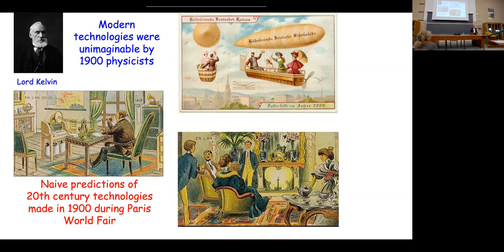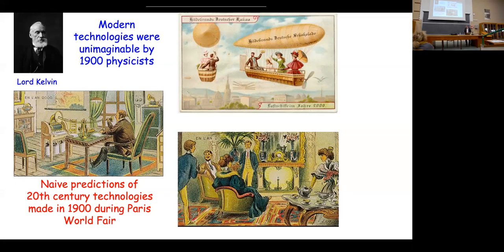There have been many postcards edited at that time which were very naive — they tried to extrapolate known technologies. For instance, you see a kind of development of the telephone, people flying in balloons — there was no notion of airplanes. And perhaps the most intriguing one shows five people around a fireplace with a piece of radium in the middle.